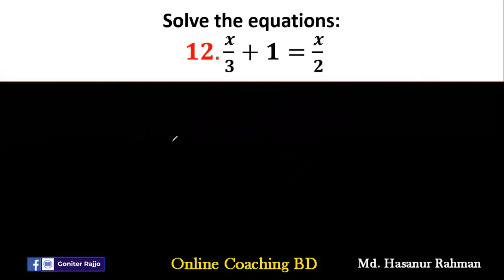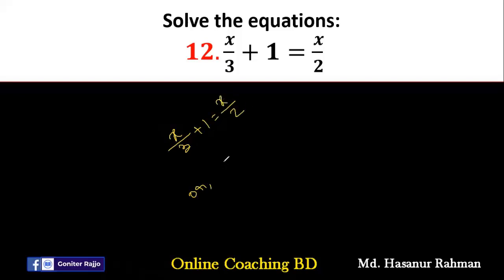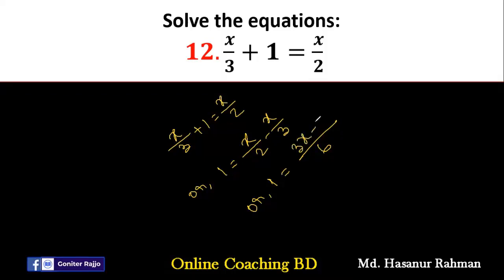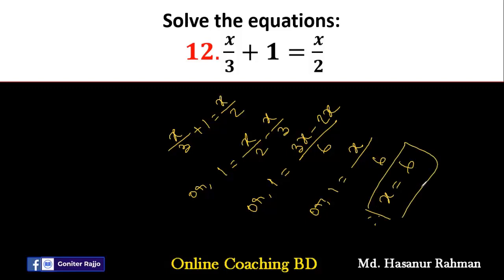Number 12 says x divided by 3 plus 1 equal to x divided by 2. Move the variable terms to one side: x by 2 minus x by 3 equal to 1. The LCM of 2 and 3 is 6. So 6 divided by 2 is 3, giving 3x; minus 6 divided by 3 is 2, giving 2x. So 3x minus 2x is x divided by 6 equal to 1, therefore x equal to 6.